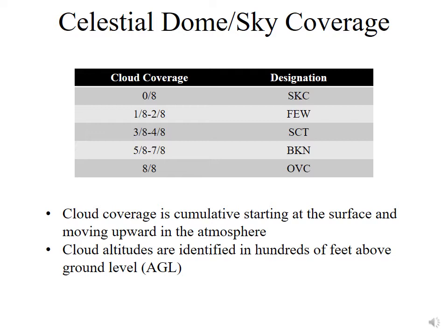In addition to looking at cloud type and naming clouds, we can also look at the amount of coverage that clouds provide for the entire sky. We refer to this as cloud coverage in the celestial dome, which divides the entire 360-degree view around the azimuth into quadrants. If zero out of eight quadrants are covered — essentially no clouds — we refer to that as SKC, which is sky clear. If one-eighth to two-eighths of the sky is covered, we refer to that as few.